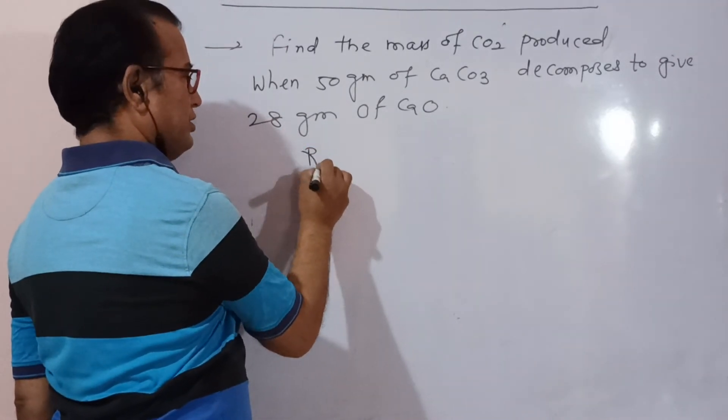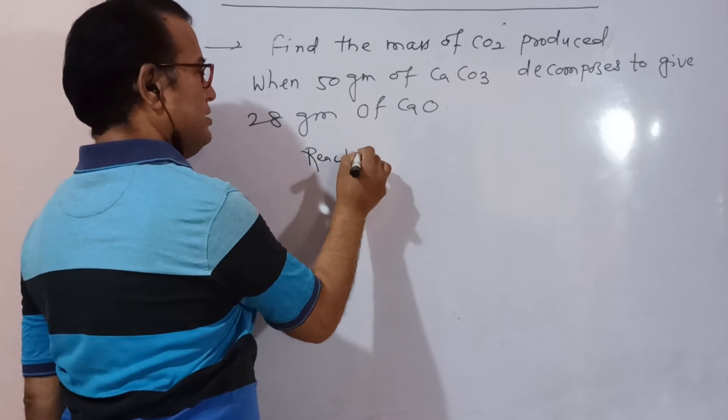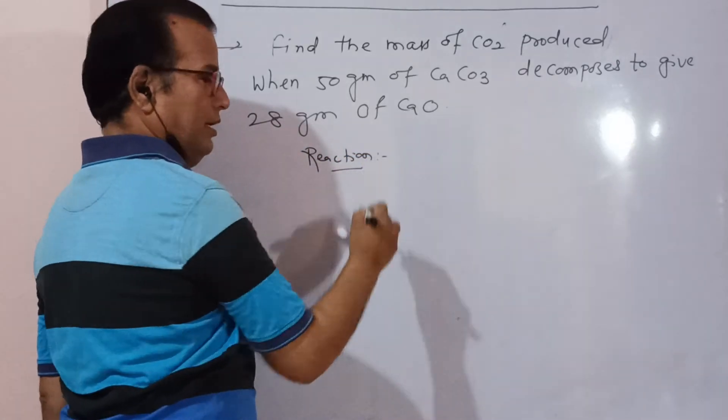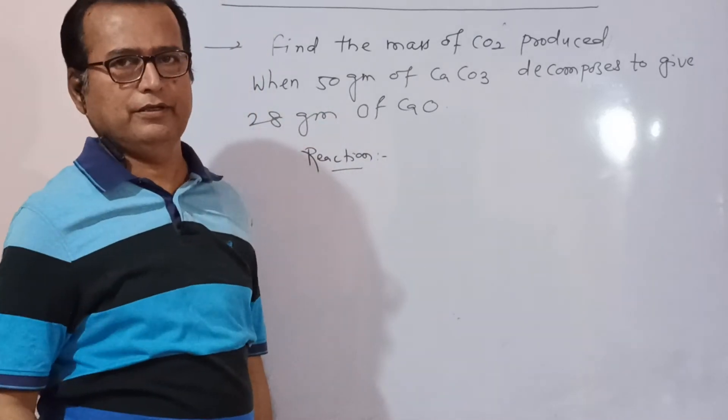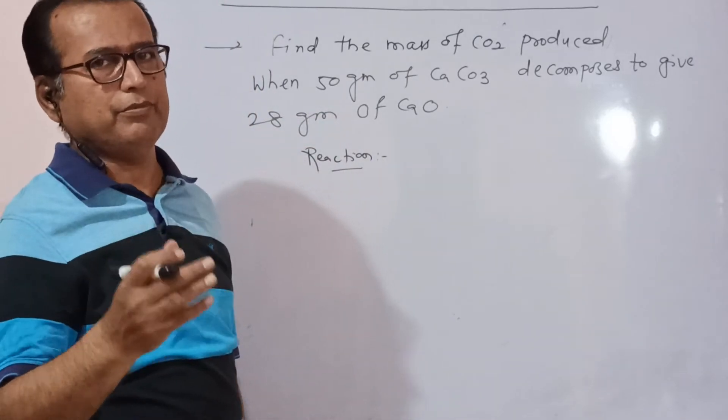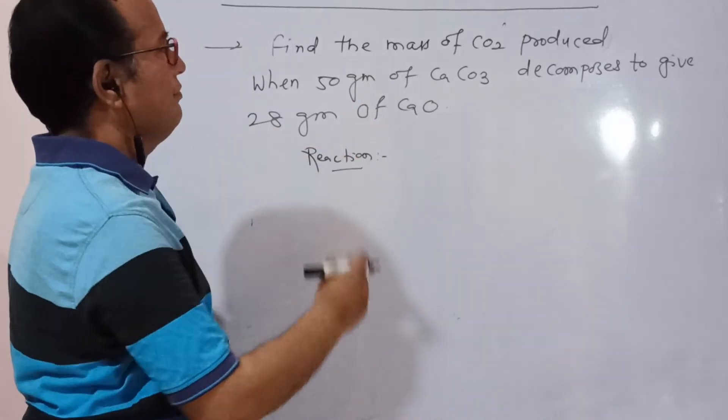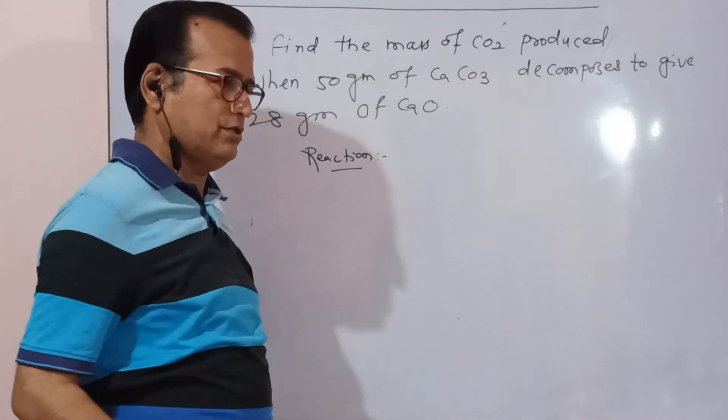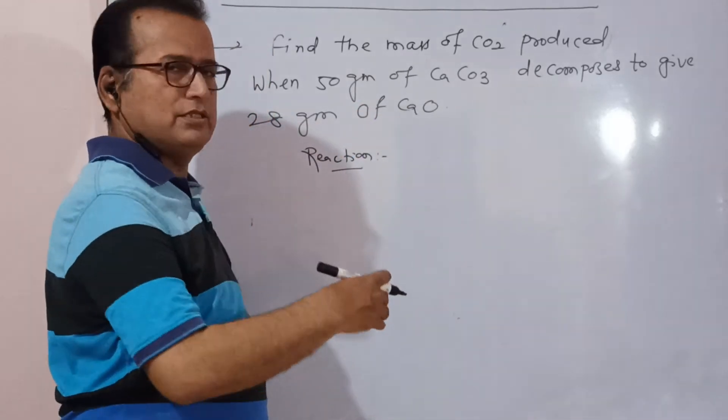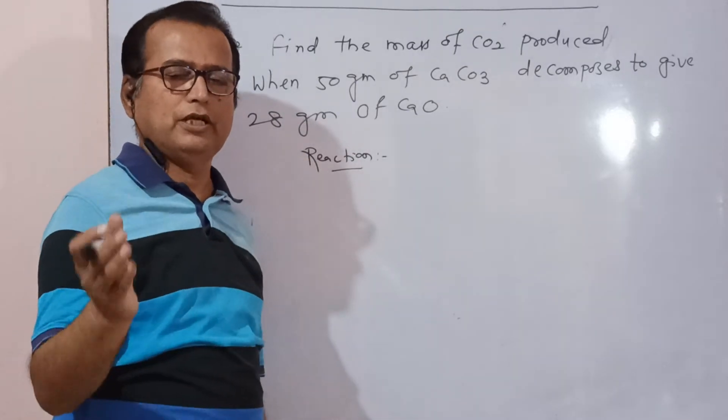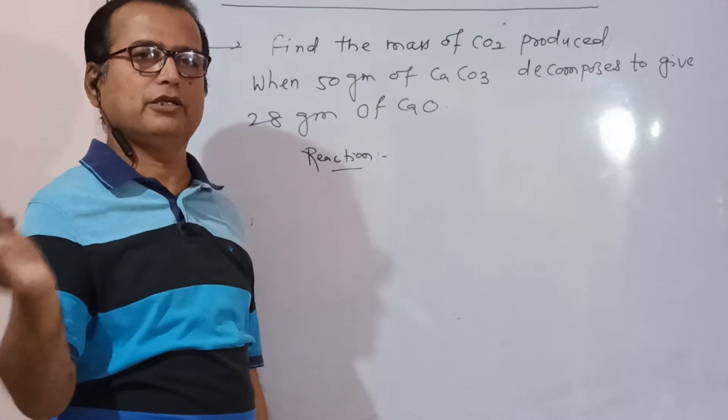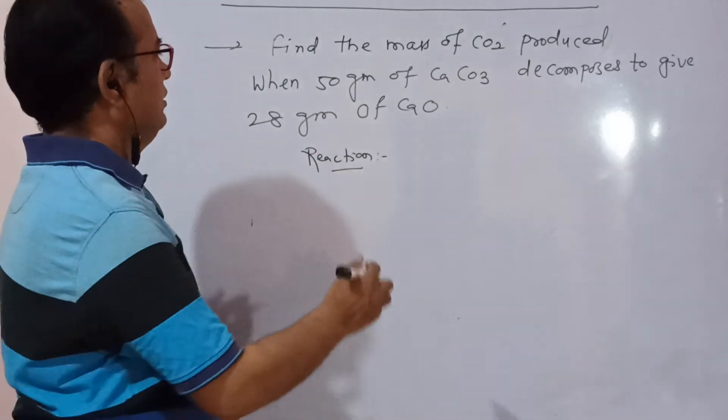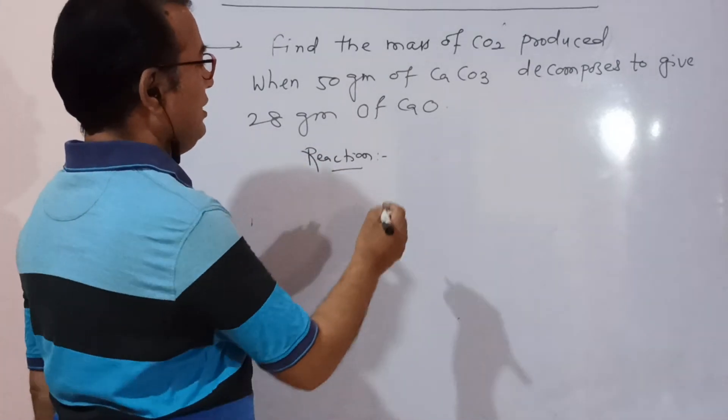At first, you must write the reaction. First step, you must think first law of conservation, law of conservation of mass. Mass is conserved. One type of mass equal to another type of mass. Mass of reactant equal to mass of product. And the reaction...